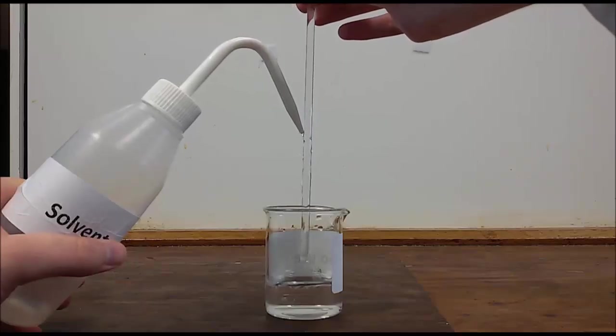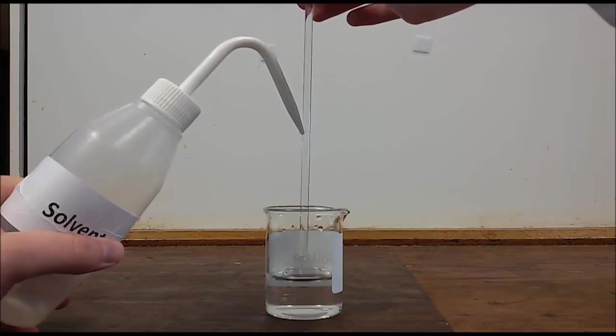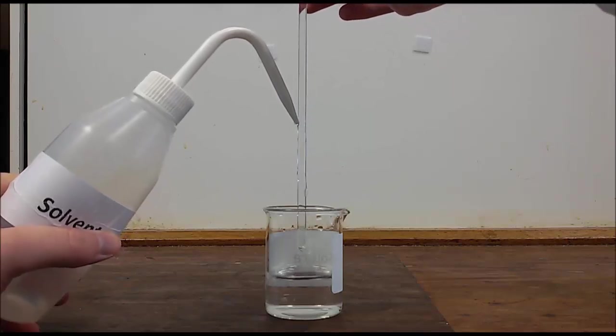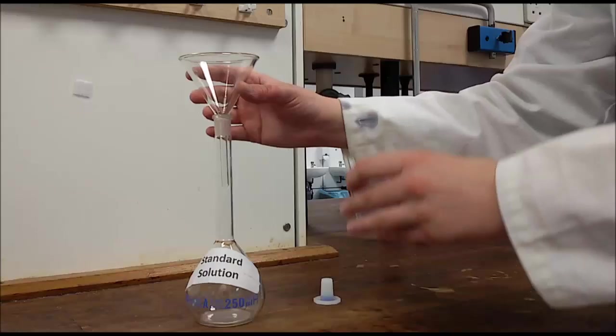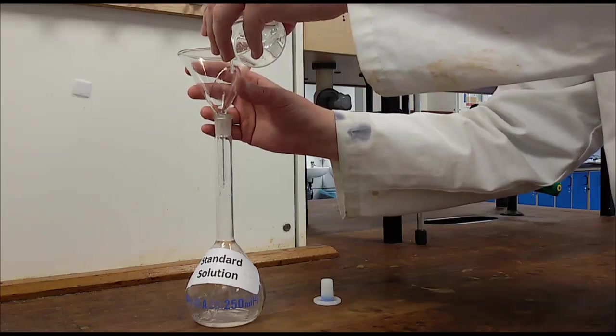Now rinse the glass rod with water down into the solution, and transfer the solution to the volumetric flask with the aid of the funnel.